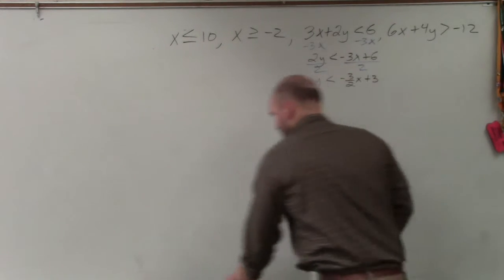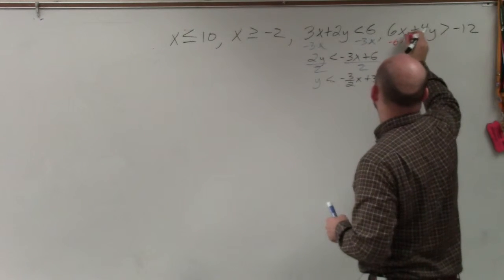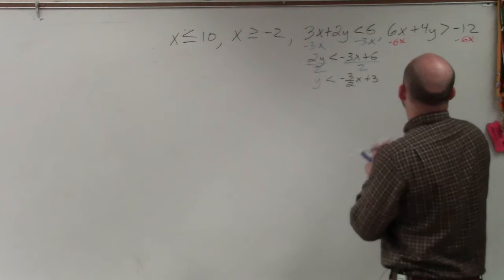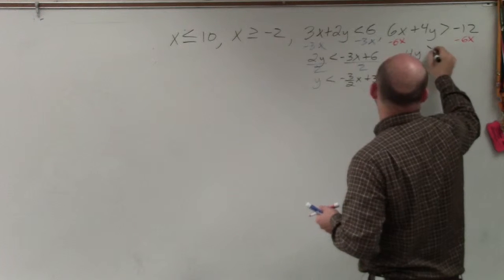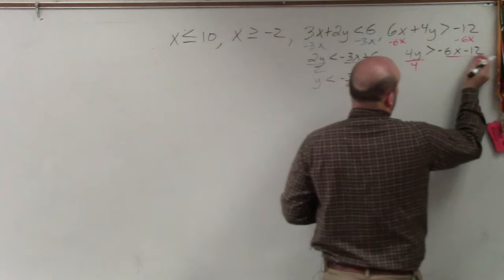Over here, I will subtract 6x. So therefore, I have 4y is greater than negative 6x minus 12. Then I'll divide by 4.